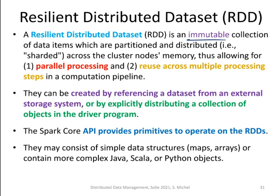RDDs can be created by loading data from HDFS, for instance, or by taking some collection of objects from your driver program and distributing the data accordingly. For example, you can receive data through your program from a Twitter API and load it into the Spark cluster. Based on the RDDs, you can then use the API to execute operations like simple selections, joins, projections, and so on.